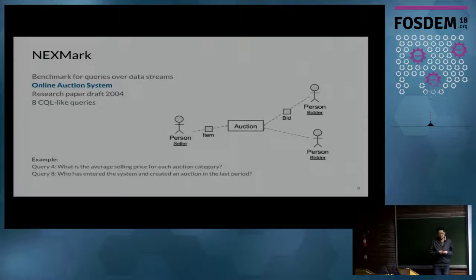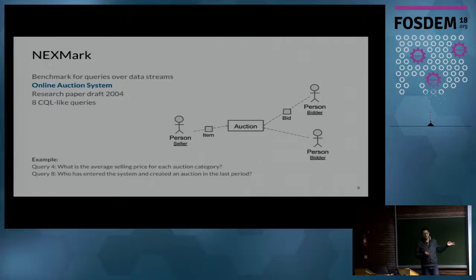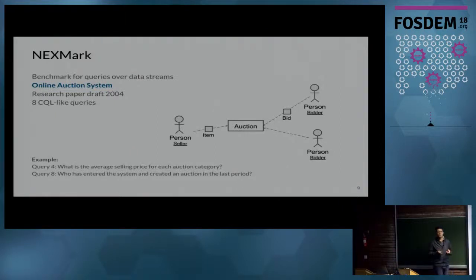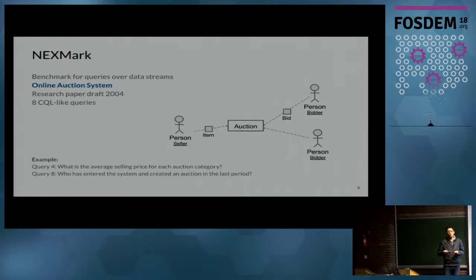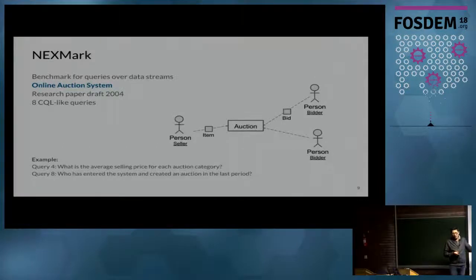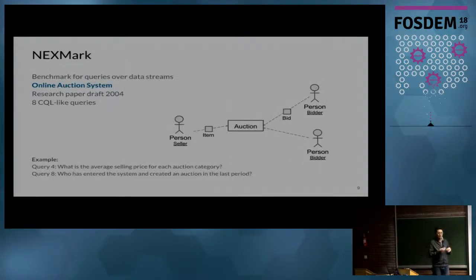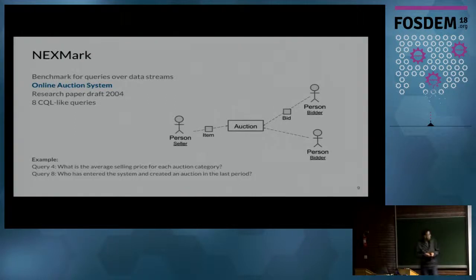But Nexmark, the benchmark I'm going to discuss today, was a publication from the early 2000s — an exciting time for research on streaming systems. These researchers created a paper that was never formally published; it was just abandoned on some academic site. They proposed a simple but nice example: an online auction system where people arrive to sell things, others create auctions, and others bid. This is a great business case that is easy to explain and rich enough to express many queries.